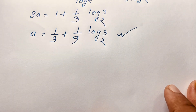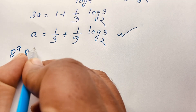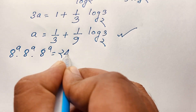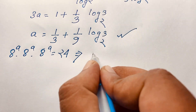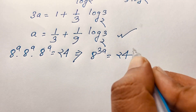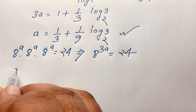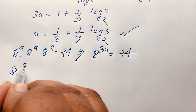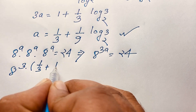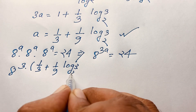Let's check our question. It will be 8 to the power A times 8 to the power A times 8 to the power A is equal to 24. This is our question. You can see 8 to the power 3A is equal to 24, and A plus A plus A equals 3A. Now if I substitute A equals one-third plus one-ninth log 3 base 2 below here.